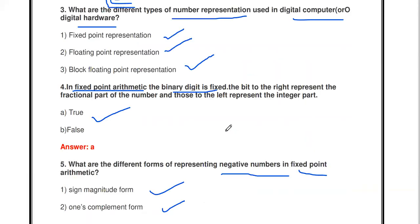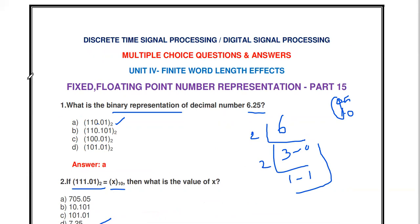Those are all the questions from number representation in a digital computer or digital hardware. The two types of binary representation are fixed point representation and floating point representation, with a third being block floating point representation. Thanks for watching — please subscribe for more videos. The remaining DSP MCQ videos are linked in the description box and available in the discrete time signal processing playlist.